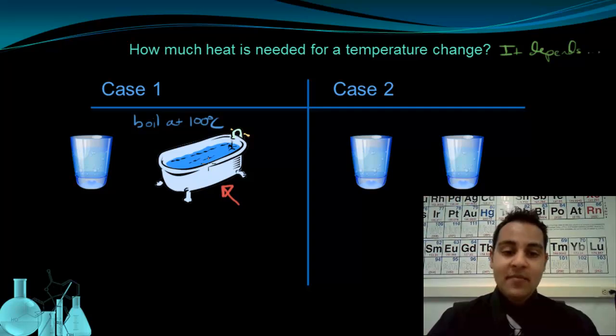So what are we really saying? That we have to add more heat to the bathtub full of water, because there's just more water present. So what we're saying is that it depends on the mass. The bathtub has a greater mass of water in it than the cup of water. Therefore, it requires more heat to cause this temperature change.